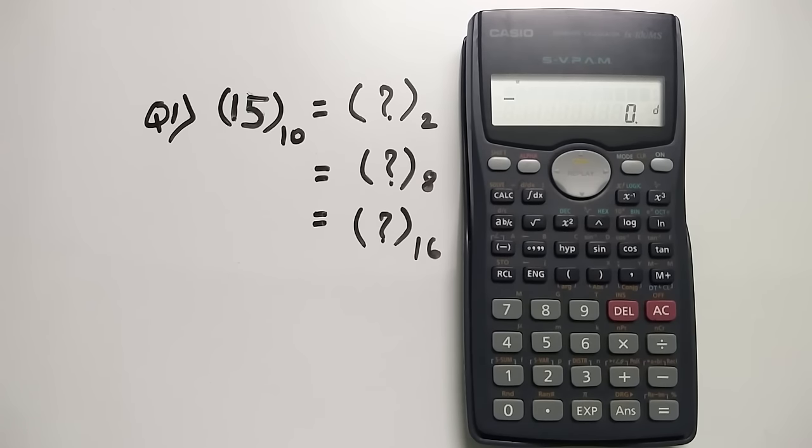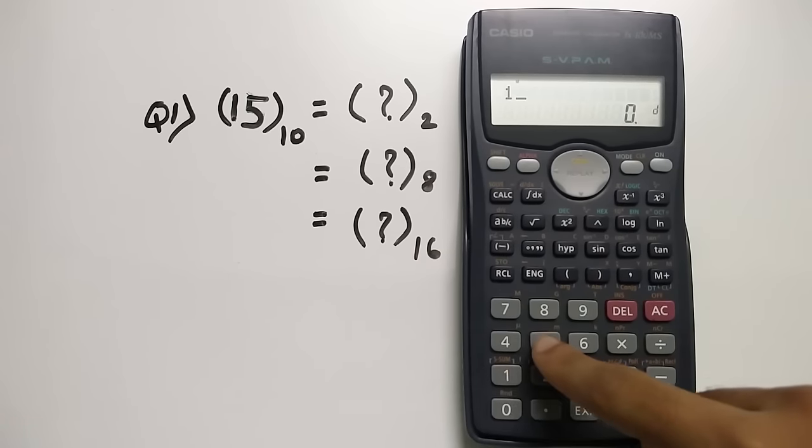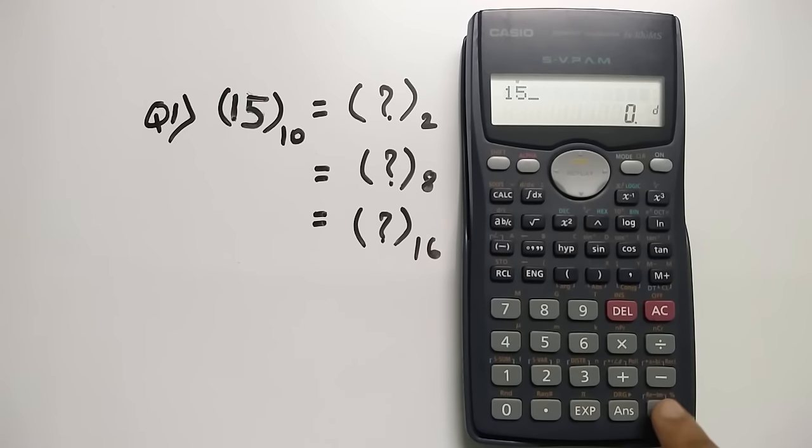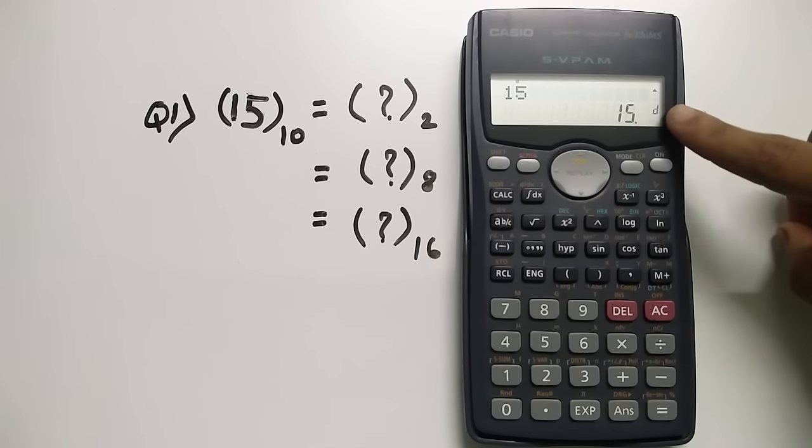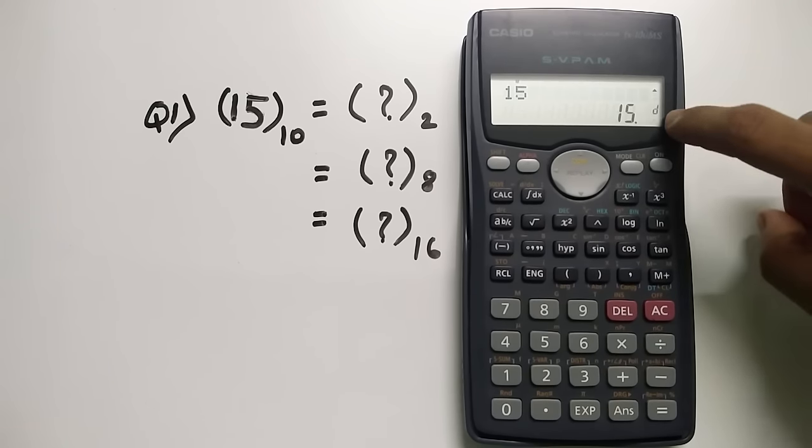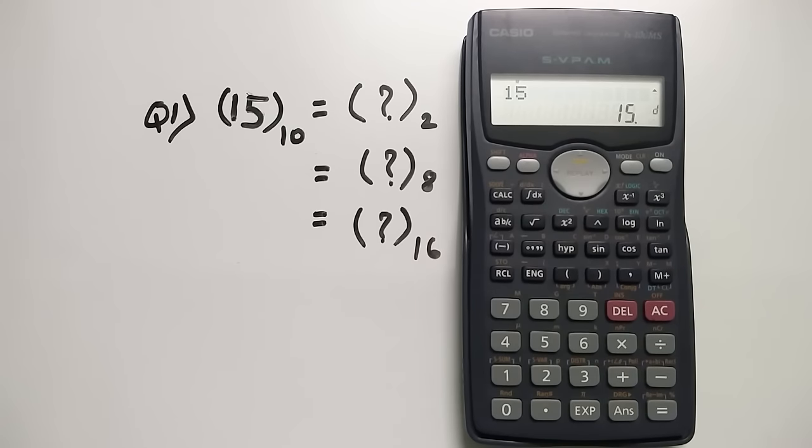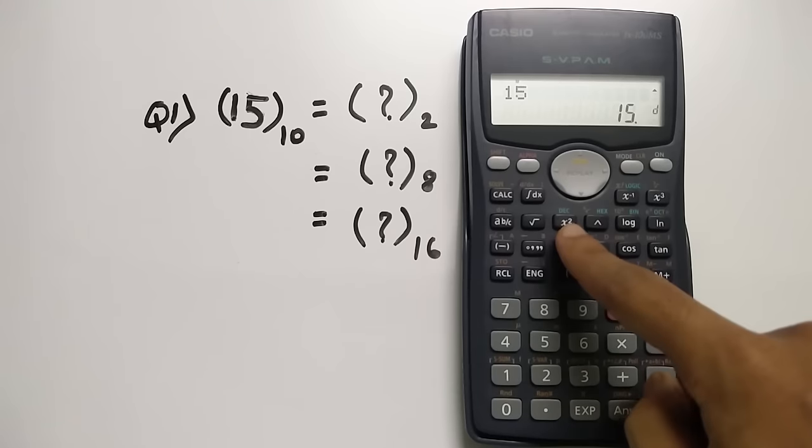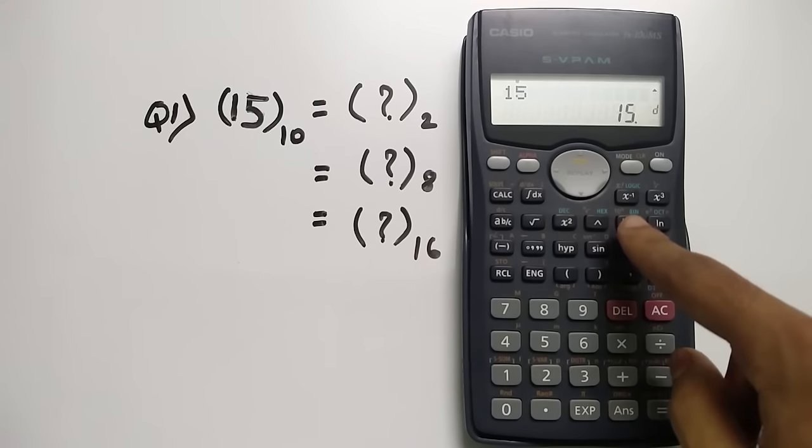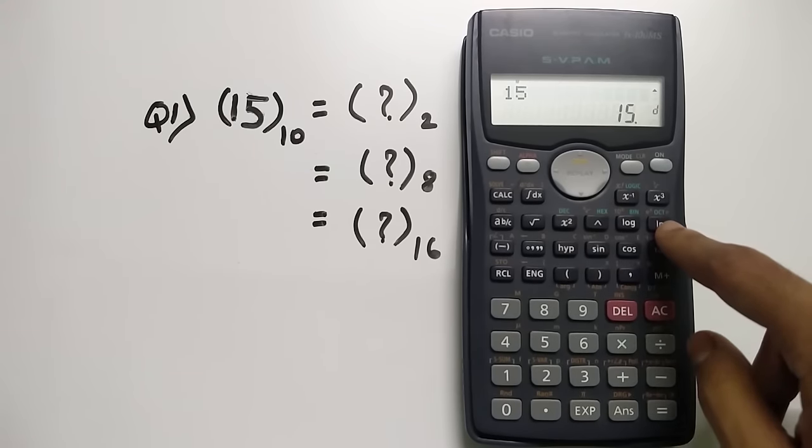Since our calc is in decimal mode right now, I'll just type in 15 and press equal to button. 15 is a decimal number as you can see because it is represented by the small letter d over here. In order to convert it you just have to select the four options: decimal, hexadecimal, binary and octal.